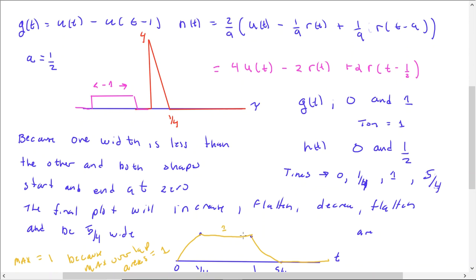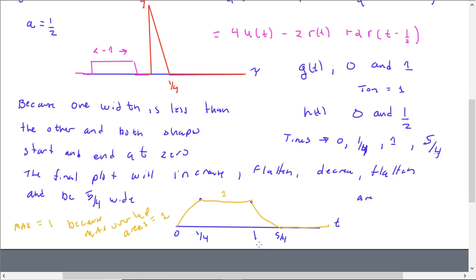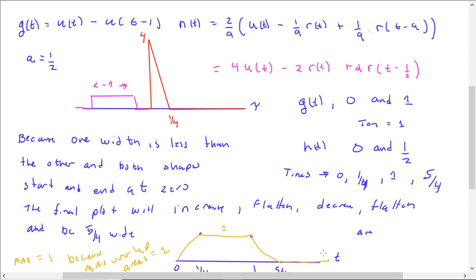And then you could check with another program. But really, there'll be a time at zero, a quarter, one, and five quarters. And that's just a rough plot.